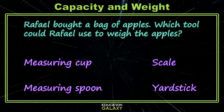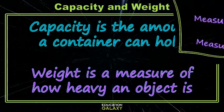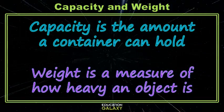So in summary, capacity is the amount a container can hold, while weight is a measure of how heavy an object is.